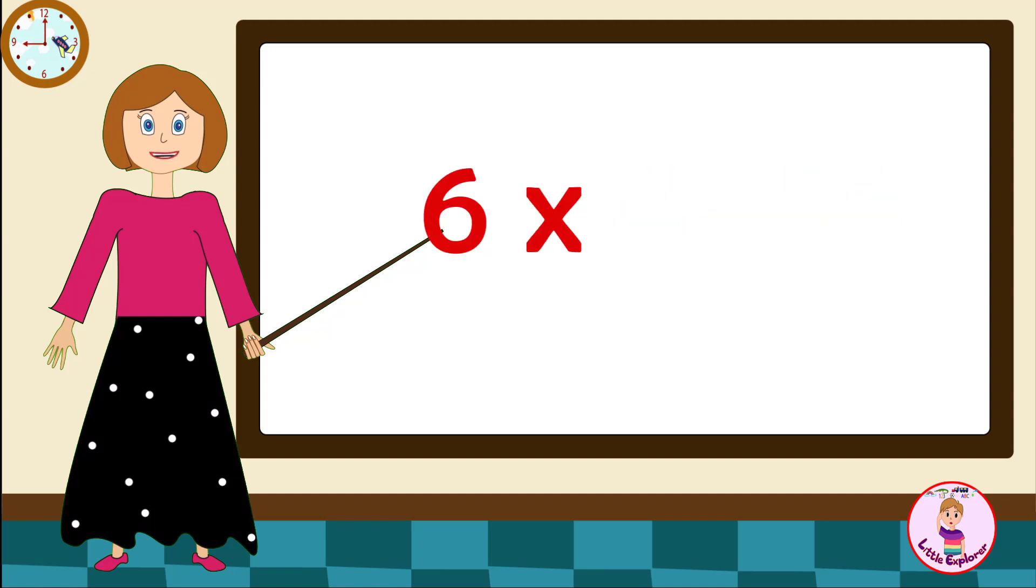Six fives are thirty, six sixes are thirty-six, six sevens are forty-two, six eights are forty-eight, six nines are fifty-four, six tens are sixty.